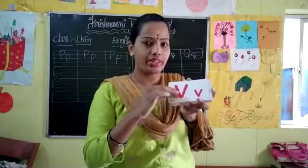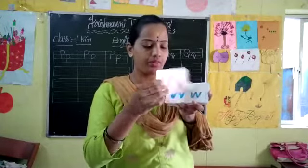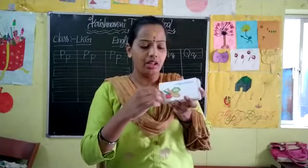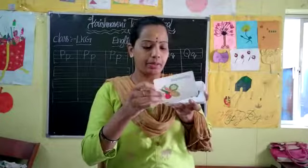And next letter is T. Capital T, small t. T for turtle. T for turtle. And next letter is U. Capital U, small u. U for umbrella. U for umbrella. And next letter is V. Capital V, small v. V for vegetables. V for vegetables.